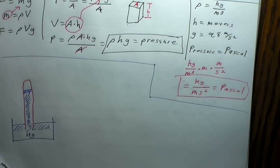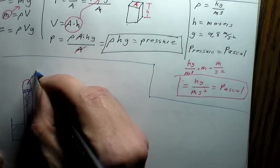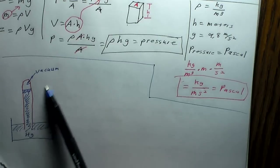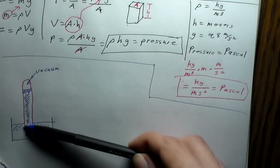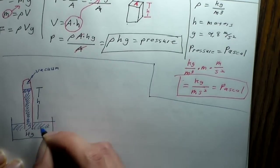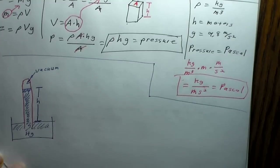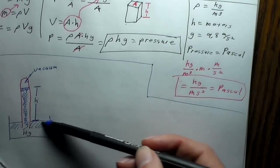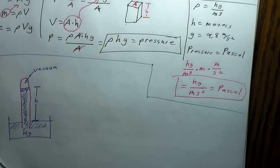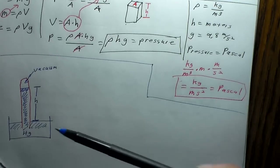Everything in blue is the mercury. Up at the top is nearly vacuum — there are a couple of mercury atoms floating around, but it's close enough to vacuum. The mercury settles at a certain level. What we measure is the height between the top of the mercury inside the tube and the level of the mercury on the outside. We're not measuring to the bottom of the tube, but to the top of the mercury on the outside.